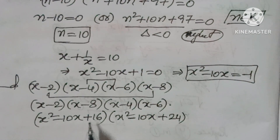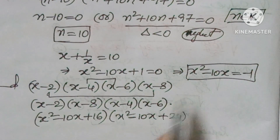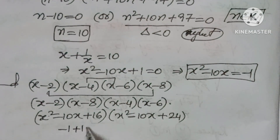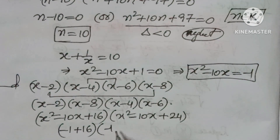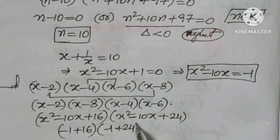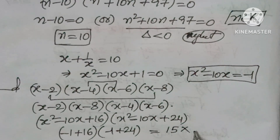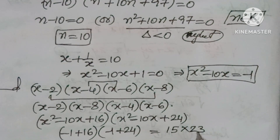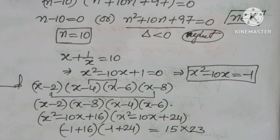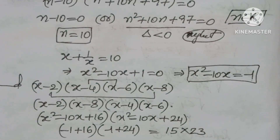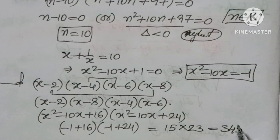We know x² − 10x = −1, so substituting: (−1 + 16)(−1 + 24) = 15 × 23 = 345. So the answer is 345.